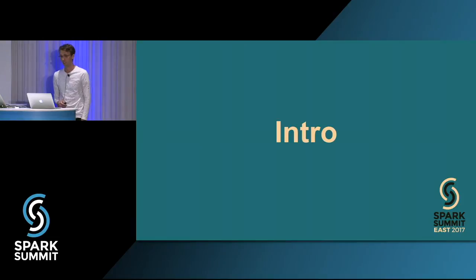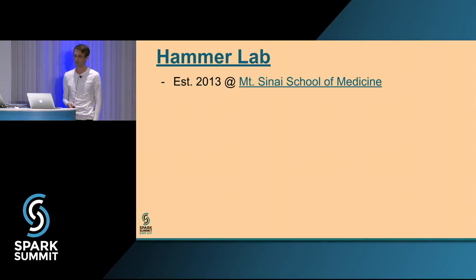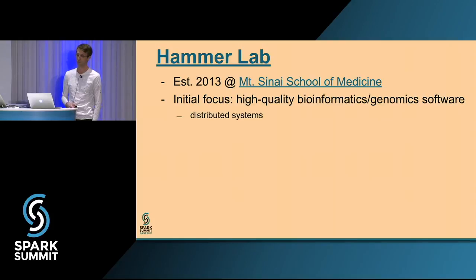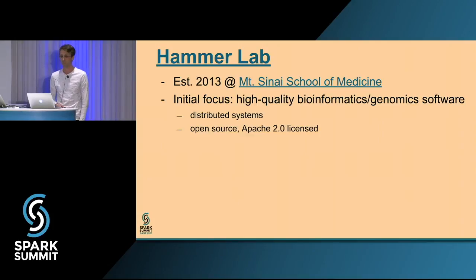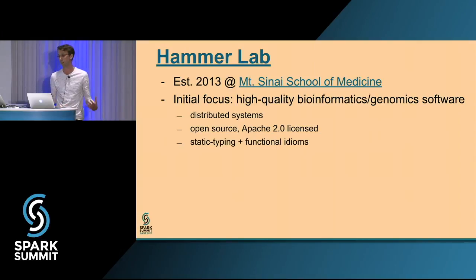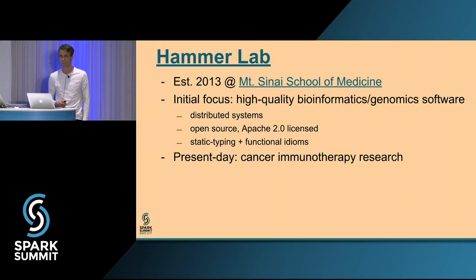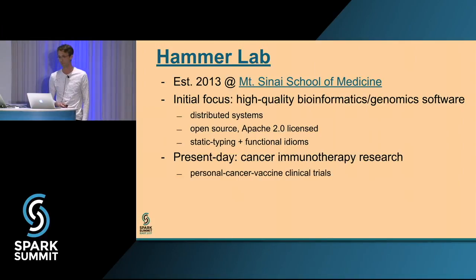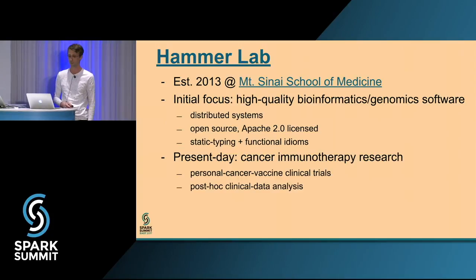The Hammer Lab is about three years old. It started with a focus on bringing distributed systems expertise to biomedical problems. We have a high emphasis on writing high-quality open-source software — almost everything we do is Apache 2.0 licensed. We like to use static typing and functional idioms, so Spark and the Scala APIs are a natural fit. In the present day we do a lot of cancer immunotherapy research, powering a couple of personal cancer vaccine clinical trials and miscellaneous clinical data analysis.